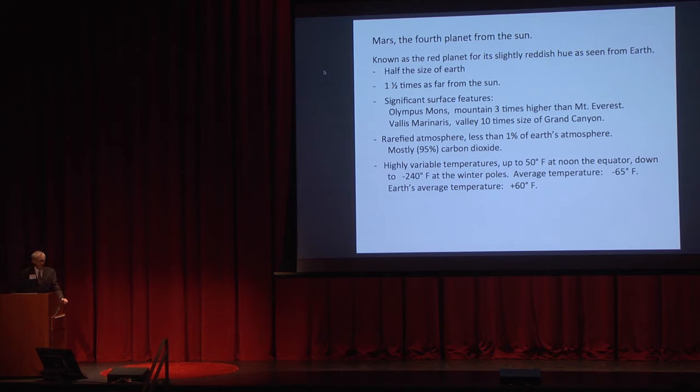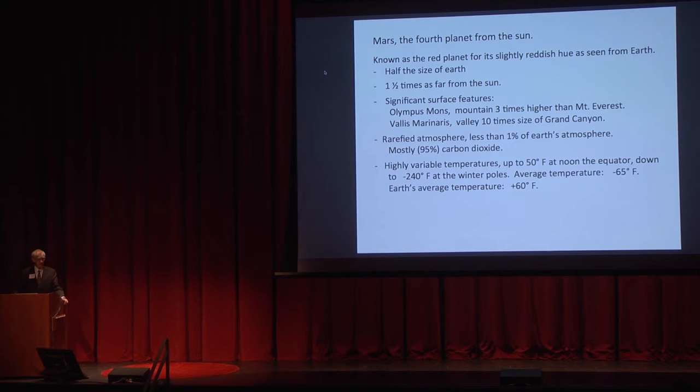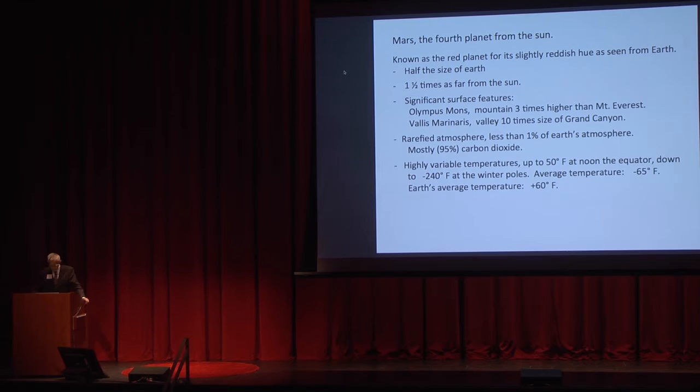But it has some very significant surface features. There's something called Olympus Mons, which is a mountain. It's three times taller than the largest mountain we have here on Earth, Mount Everest. And it has a big valley called the Valles Marineris. It's about ten times bigger than the Grand Canyon. If you look at that on the United States, it'd go from California almost all the way across to the East Coast.